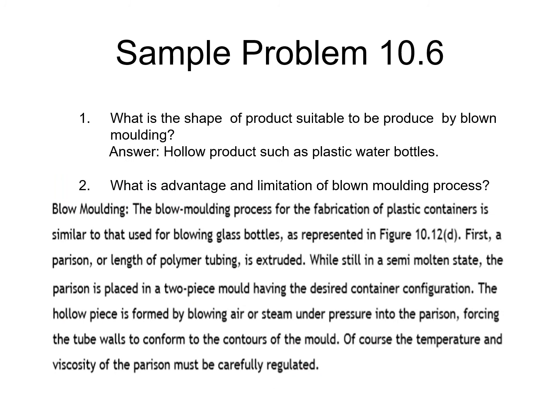A sample problem discusses questions relating to blown molding: what is the shape of products suitable to be produced by blown molding? The answer is hollow products, like plastic water bottles. For questions on the advantages and limitations of blown molding, you may need to summarize all the different processes and compare them. An example answer is provided.